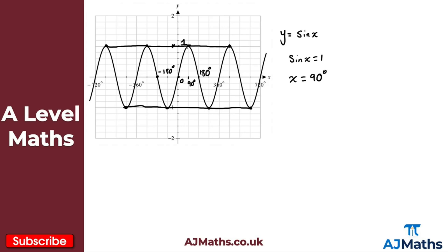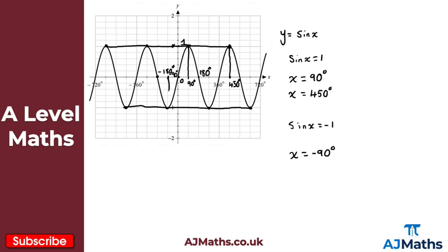At 90 degrees that gives us a height of one. We've also got x equals 450 degrees — going up from that point we can see the maximum value of one there again. For the minimum, sine x equals minus one when x is equal to minus 90 degrees — extending down we can see our minimum there. That gives us a sketch of y equals sine x.